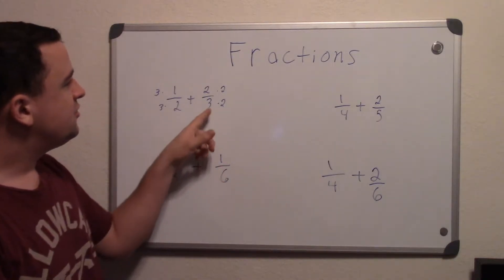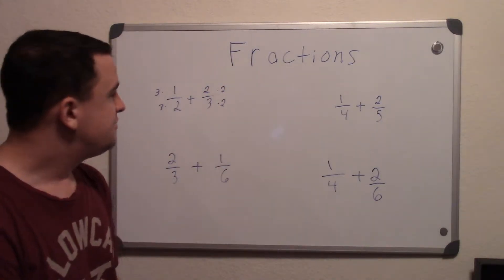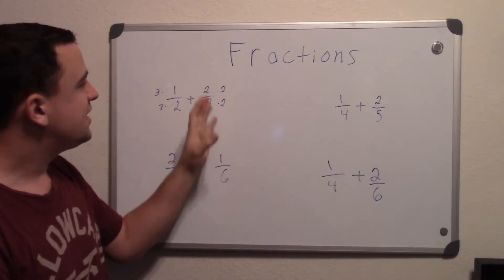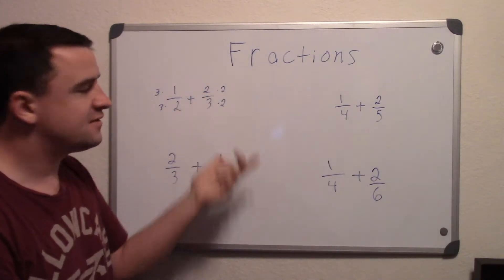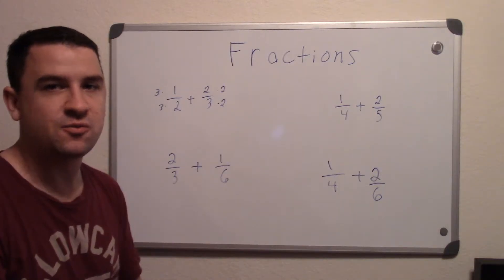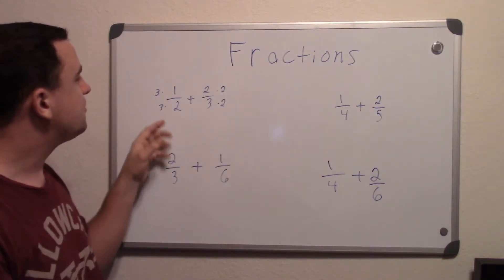So why am I doing top and bottom by that? It's because you have to have a common bottom base. And whenever you do that, the reason why you do it to the top is because you're making the fraction the same. If I'm multiplying it by 2 over 2, that's the same thing as 1 over 1, which is 1. Same with over here, 3 over 3 is 1.